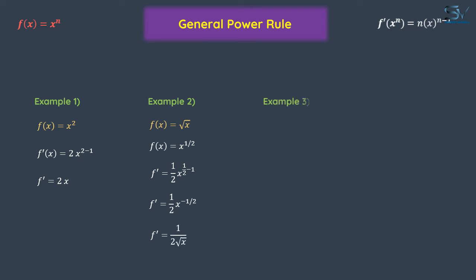Here is another example: 1 divided by x is the function. Bring the power minus one to the front of the equation and reduce the power by one. Minus one and minus one equals minus two. It will go to the denominator.